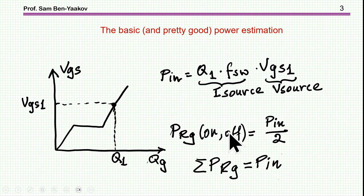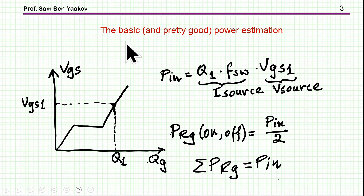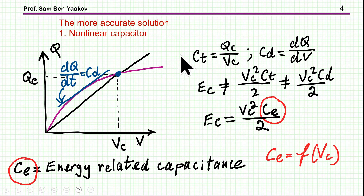This holds for both the on-time and off-time, because during the off-time the energy stored in the capacitor is discharged through the resistor to zero. So the total power dissipated in the resistances — whether one resistor or a couple — is actually P_in. This is the conventional way of calculating the power dissipation of the gate resistors, and it's pretty good. The objective of this presentation is to get a more accurate solution and also to gain an intuitive understanding of the process, including the effect of the non-linearity of the gate capacitance.